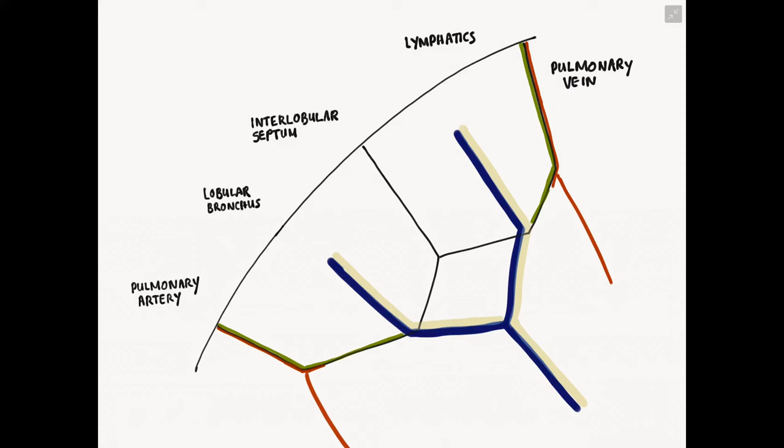When you're trying to learn anatomy, it's often helpful to draw out the structures and then label them. What I've done here is I've drawn two secondary pulmonary lobules and written out all of the structures, so we're just going to go through and label each one.